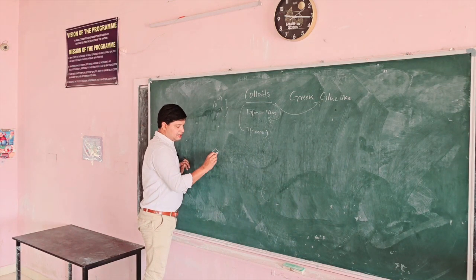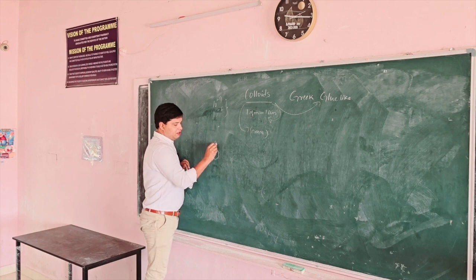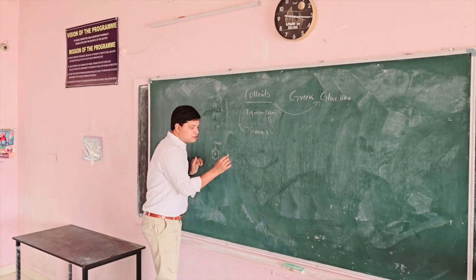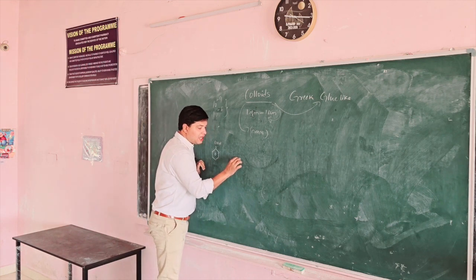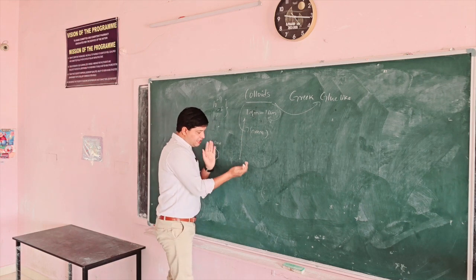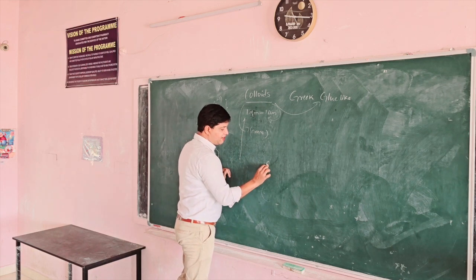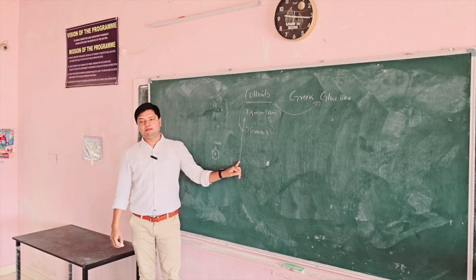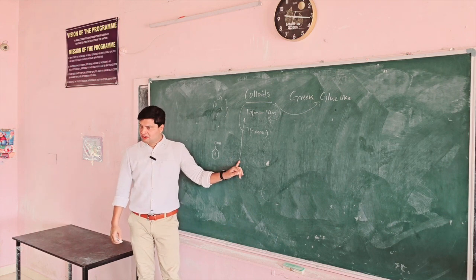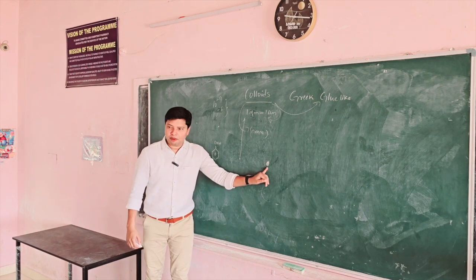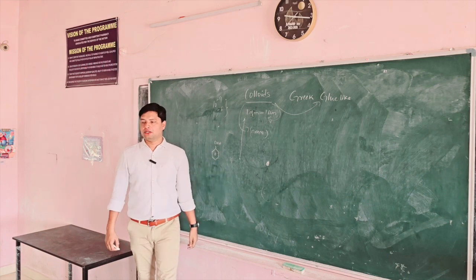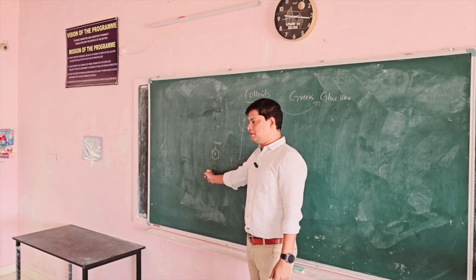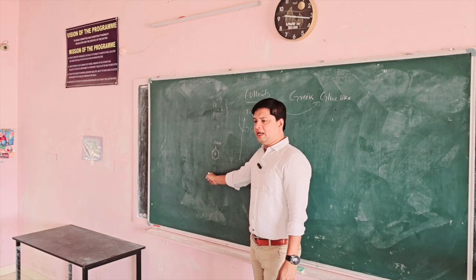If you keep adding molecules further, you will get a large particle — this is coarse. So colloidal particles are particles which have size between a coarse particle and a molecule. They have size between coarse particle and molecule. These are the colloidal particles.